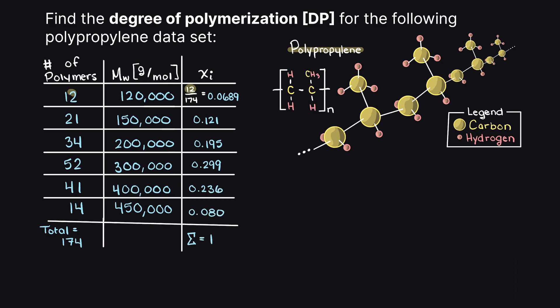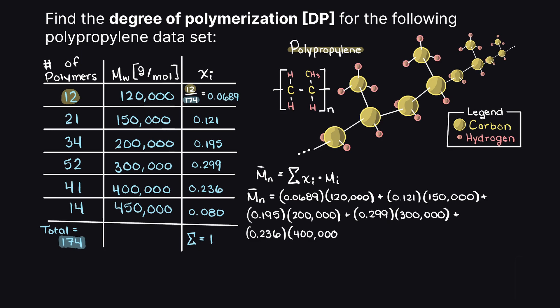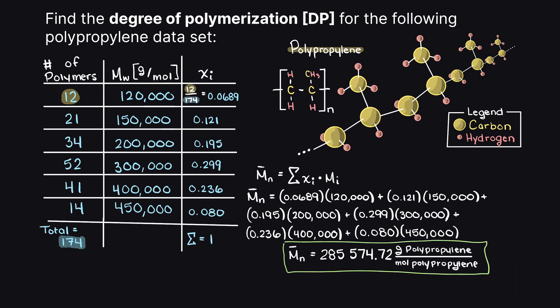And, that is all we need to do to find the number average molecular weight. We now just apply the formula we discussed previously and multiply the number fraction for each molecular weight by the molecular weight of that given range. After summing all of these terms, you can see that the number average molecular weight for this polymer sample is 28,574.72 grams of polypropylene per mole of polypropylene.